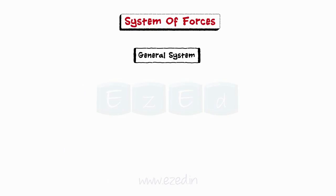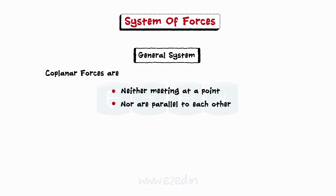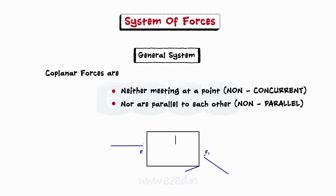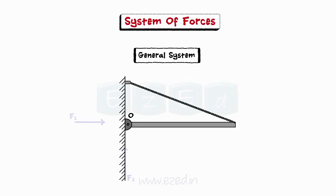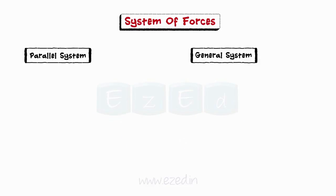In a general force system, coplanar forces are neither meeting at a single point nor are parallel to each other — also known as a non-concurrent and non-parallel system. For example, the forces acting on a rectangular plate form a general system. Consider a bracket connected to the wall using a hinge and a string with an object kept on it — the forces in the string, the support reactions, and the self-weight all lie in the same plane but are neither concurrent nor parallel, so they form a general force system.